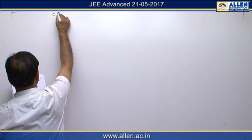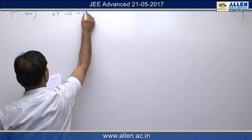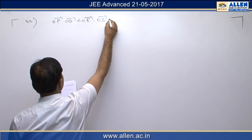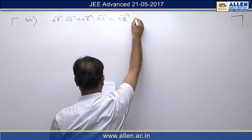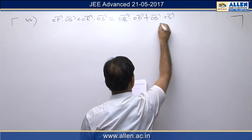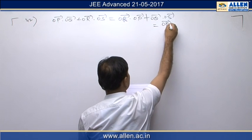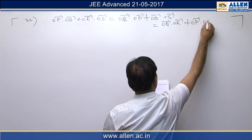In question number 42, O is the origin and PQR is an arbitrary triangle. Point S satisfies the condition: OP·OQ + OR·OS = OR·OP + OQ·OS = OQ·OR + OP·OS.